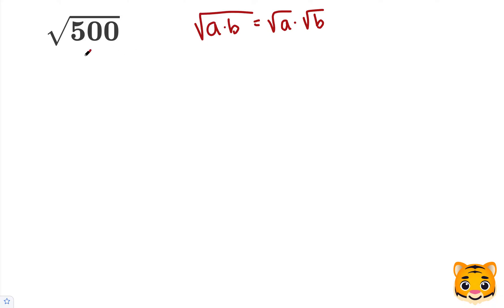To do this with 500, we need to separate 500 into two factors, 5 and 100. While there are other factors of 500, I chose 5 and 100 because 100 is a perfect square.